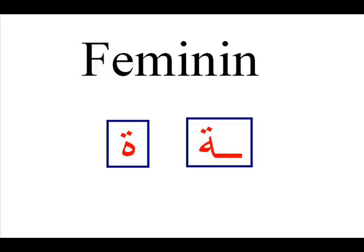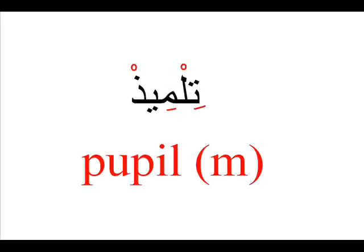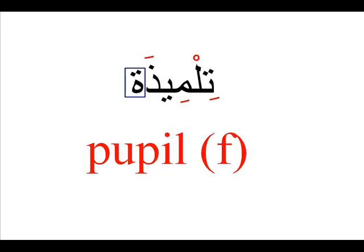When do we use the first kind? We use it after the letters alif, hamza, dal, waw, ra, zay. If you see these letters at the end of the word and you want to build the feminine, put this kind of taa marboota. For example, the word 'tilmidh' means 'pupil' in the masculine. This word ends in waw, so we use the first taa marboota, and it becomes 'tilmidhah'.